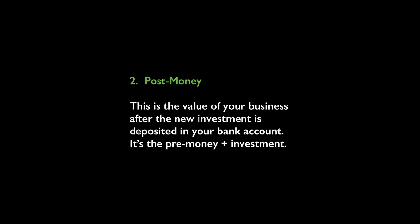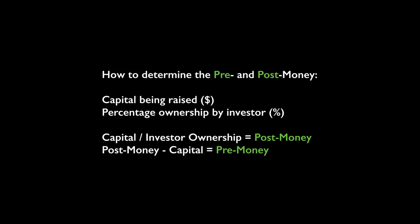If we think about the pre-money, it's basically just the post-money minus that $5 million investment — so in this case, the pre-money would be $20 million. To determine the pre and the post, we think about the capital being raised, the percentage ownership of the investor, typically 15% to 25%, and we think of the capital divided by that investor ownership as equal to the post-money valuation, and then the post-money minus that capital as equal to the pre-money valuation — pre-money meaning before that capital infusion happens.